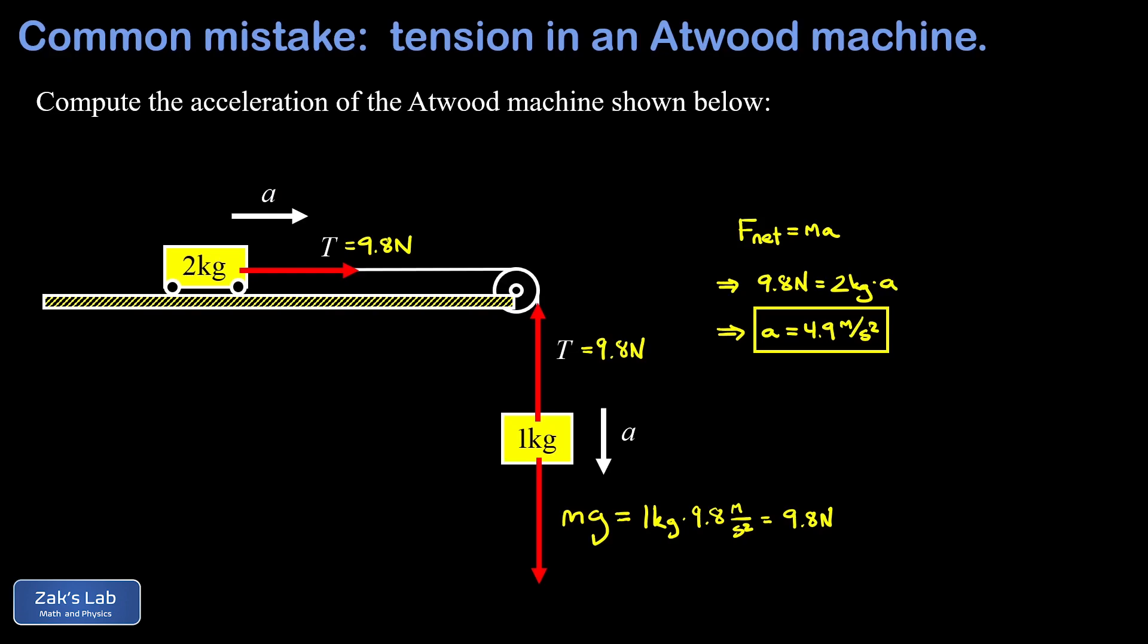So in the problem, we're given this simple Atwood machine where a two kilogram cart is being pulled along a horizontal track. That's tied to a one kilogram hanging mass. And then what we're asked for is just the acceleration of the Atwood machine.